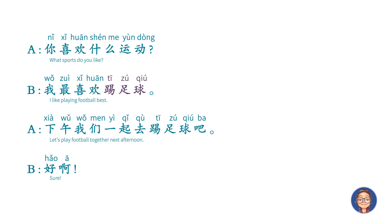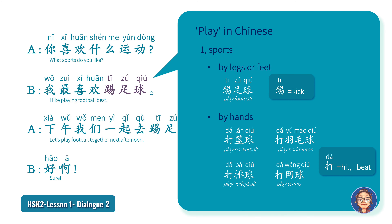踢足球. In English the word 'play' corresponds to various verbs in Chinese. Firstly, related to sports: in our dialogue, 踢足球 — football — but 踢 actually means 'kick', because we use our foot to play football.